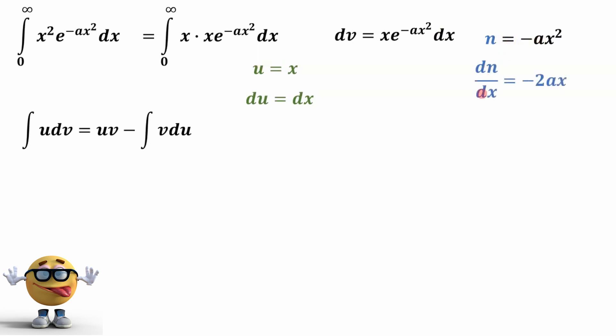and therefore dn/dx is going to equal negative 2ax. And now if we rearrange this equation and solve for x dx, we'll get dn over negative 2a. X times dx is dn over negative 2a.